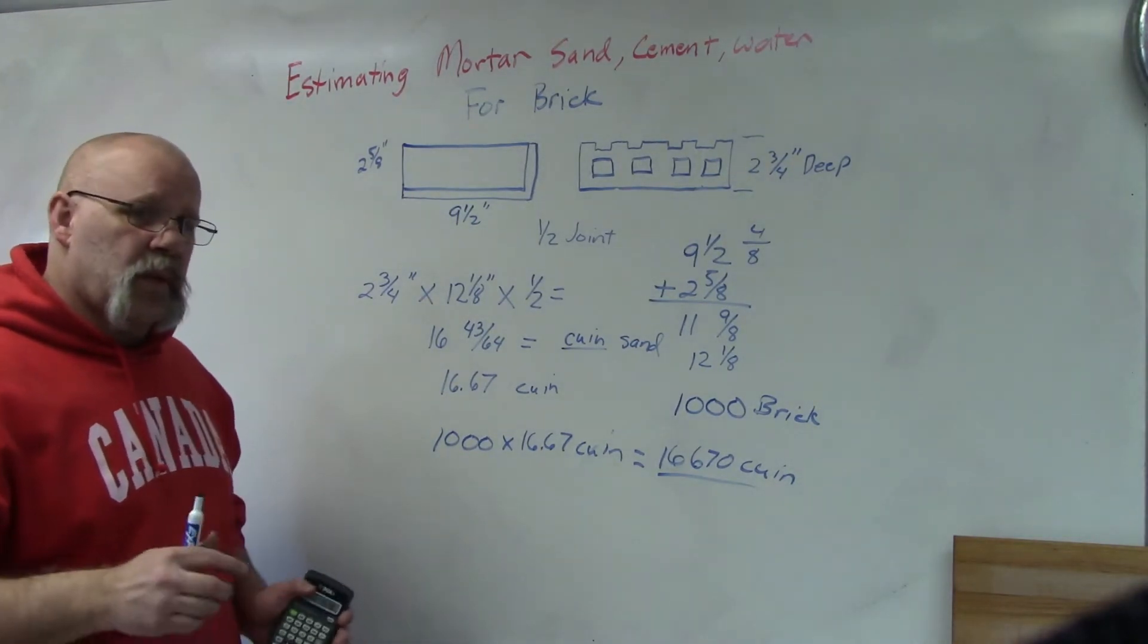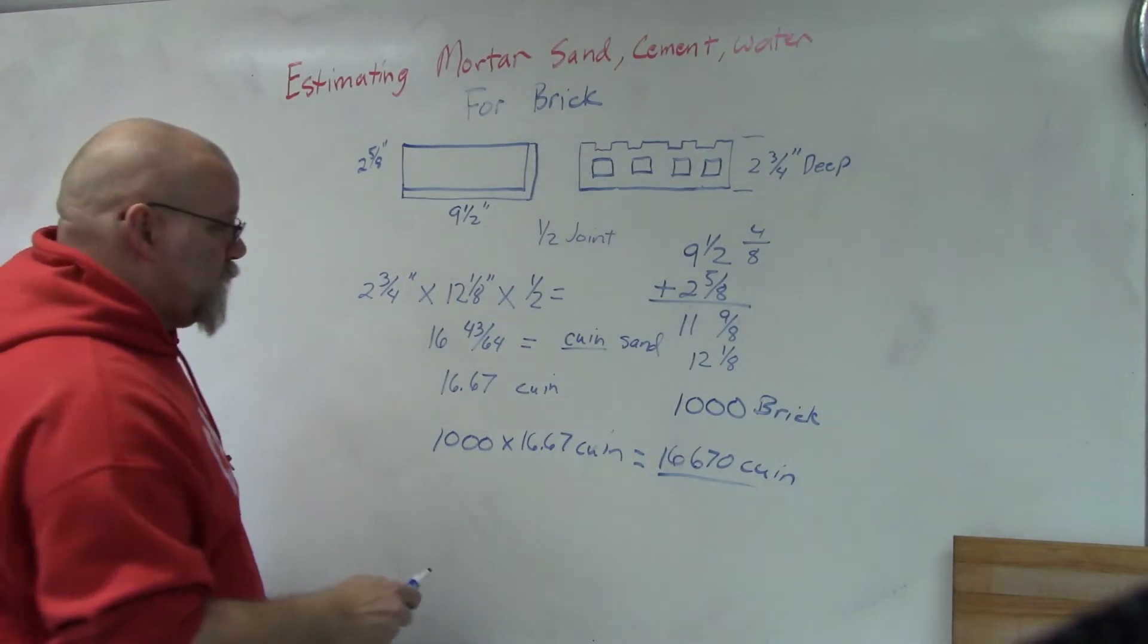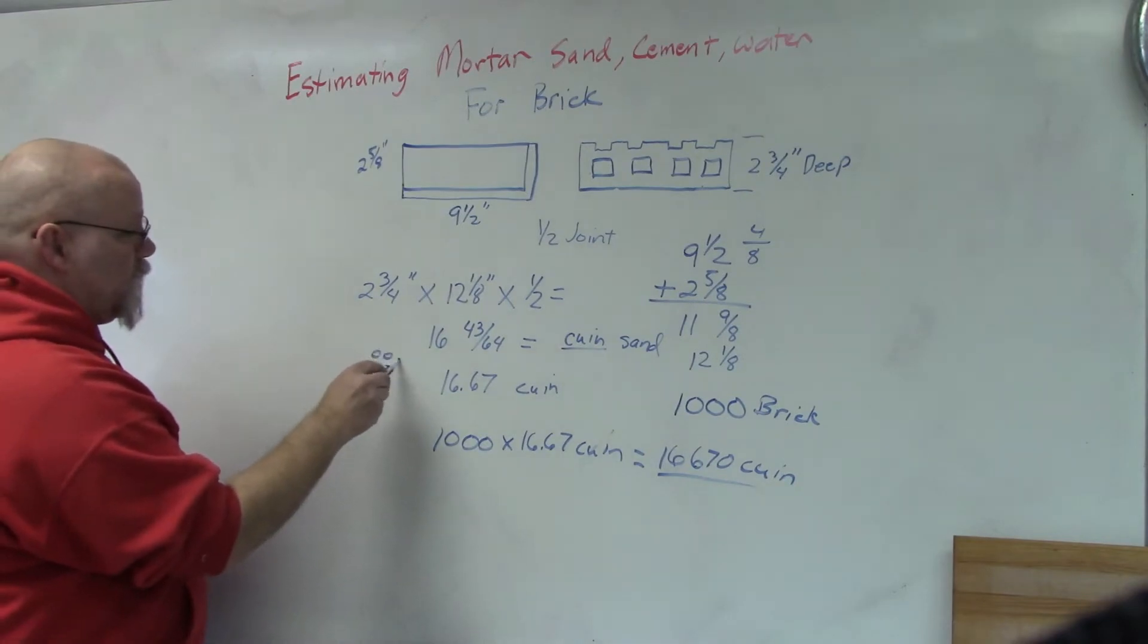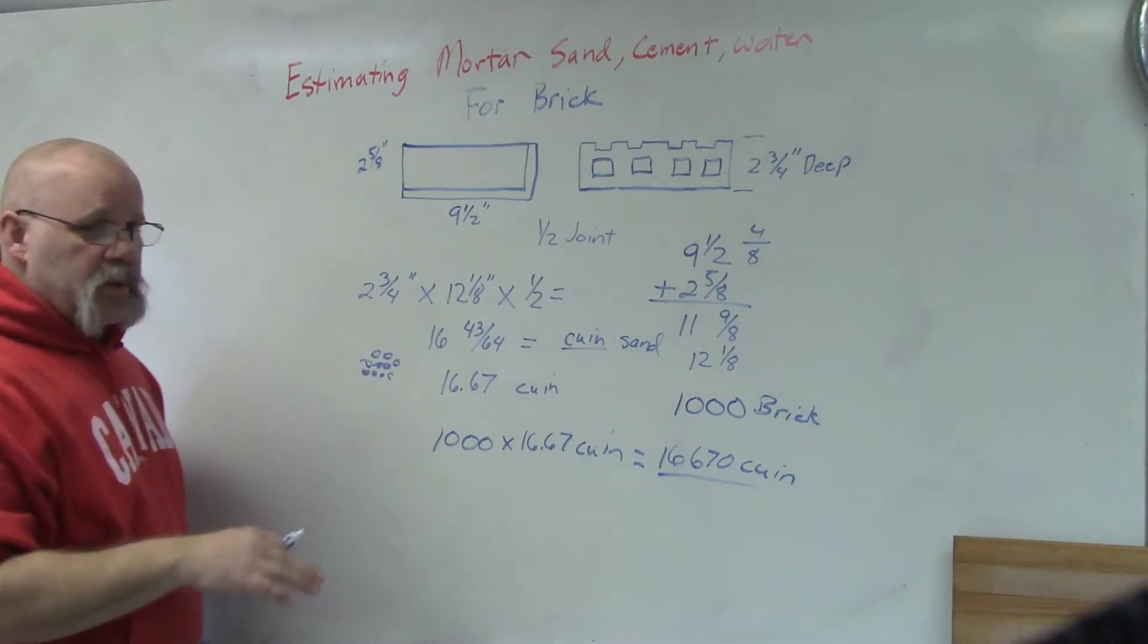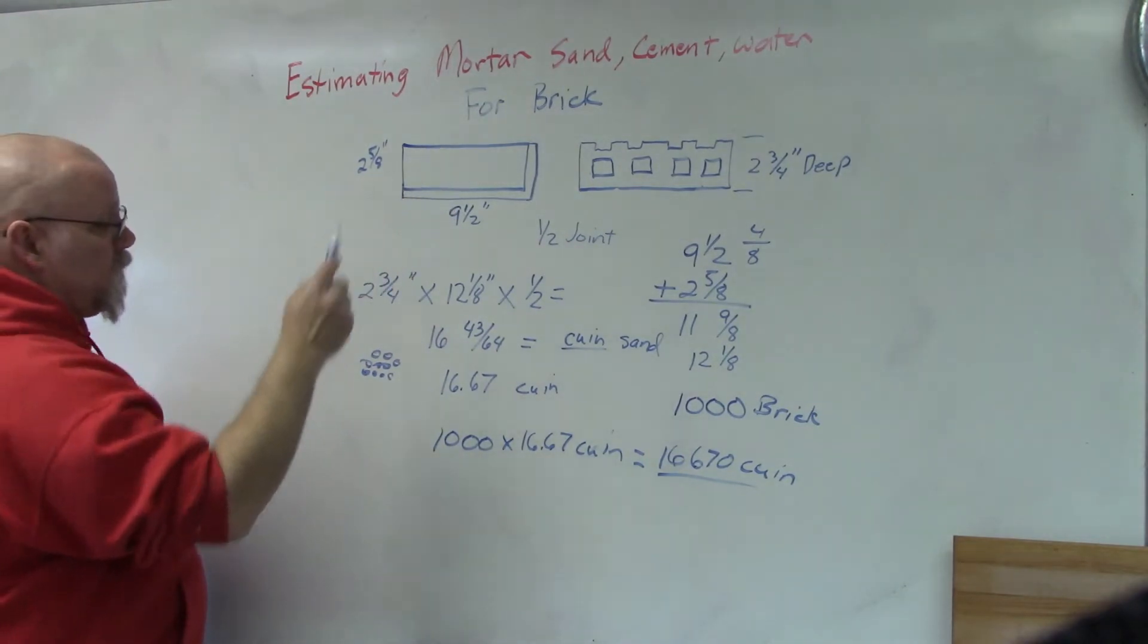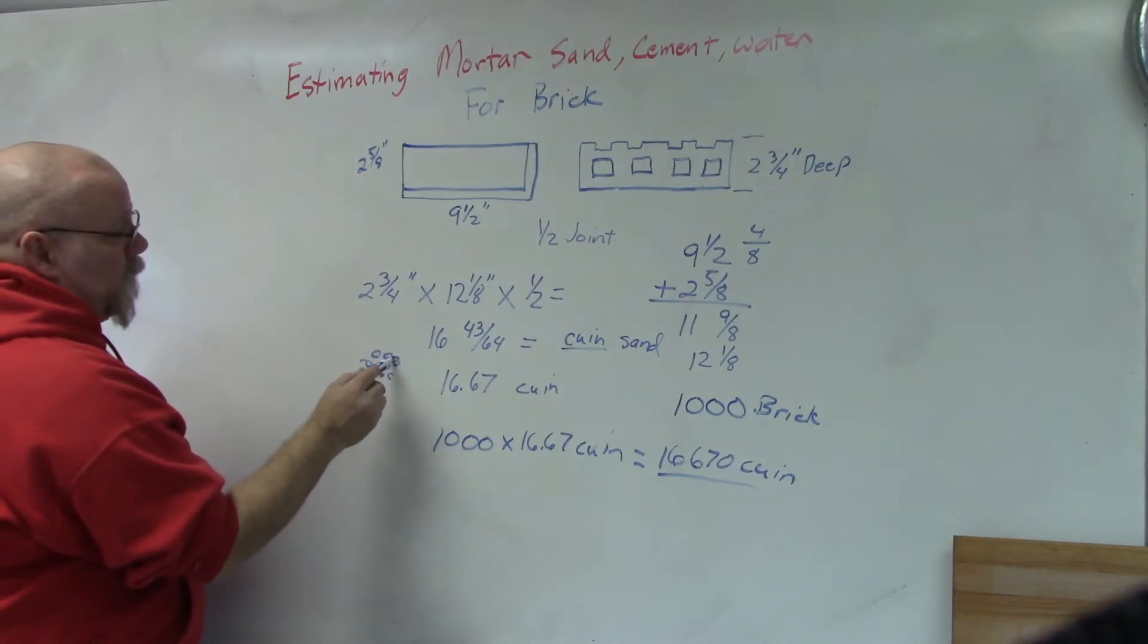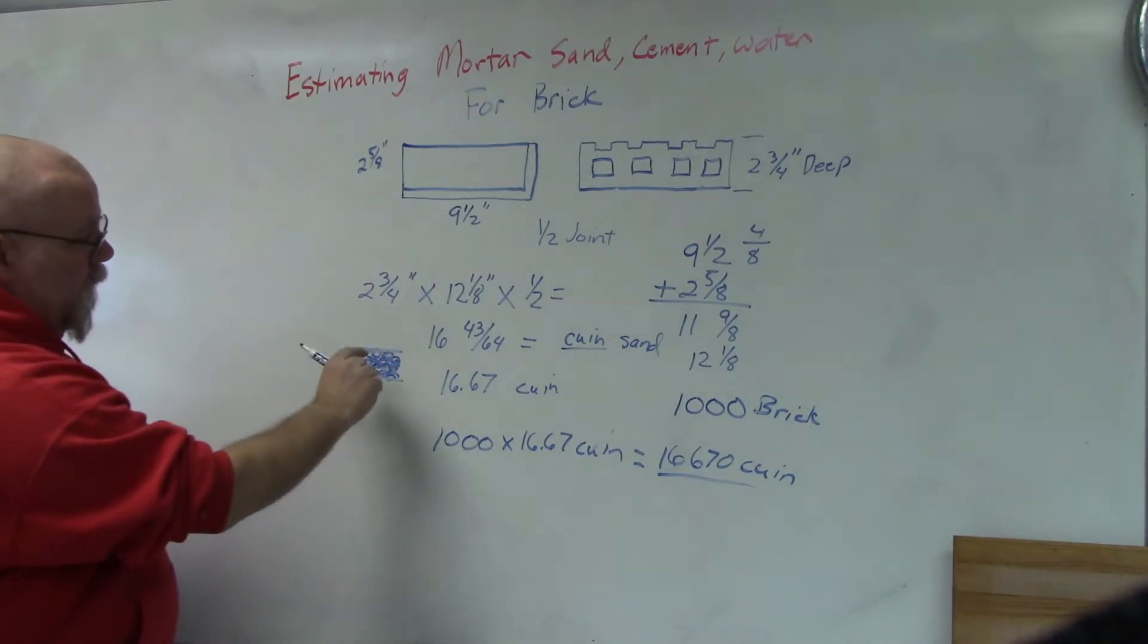Now when figuring this, I'm figuring sand because sand makes up most of the volume of your mortar. What happens is the sand is just little rocks, the sand is clean so there's no dirt or anything in there. What the cement water mix does is it coats all of those little stones with mortar and then it fills in all the voids, so you get a solid mass when you get done.